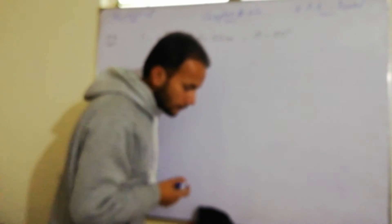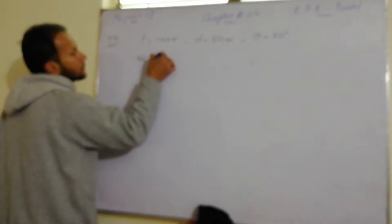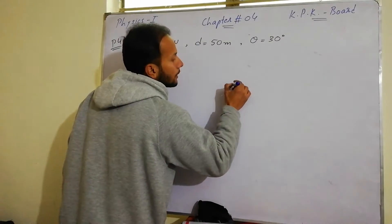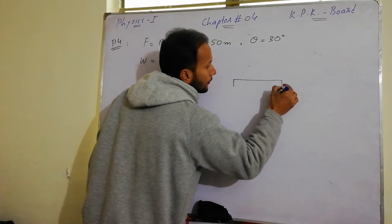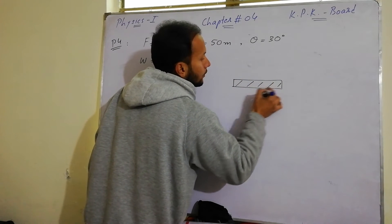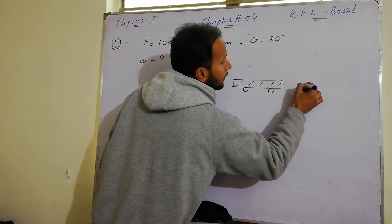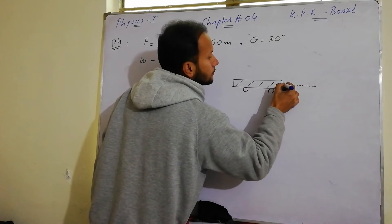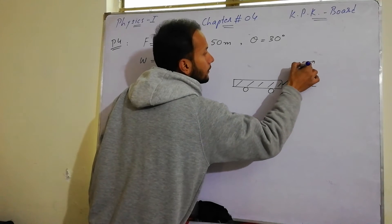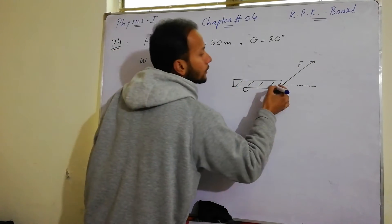So we have to calculate the work done. This means here we have a trolley. This is a trolley, this is horizontal. And this is a force, 100 newton, and this is horizontal.